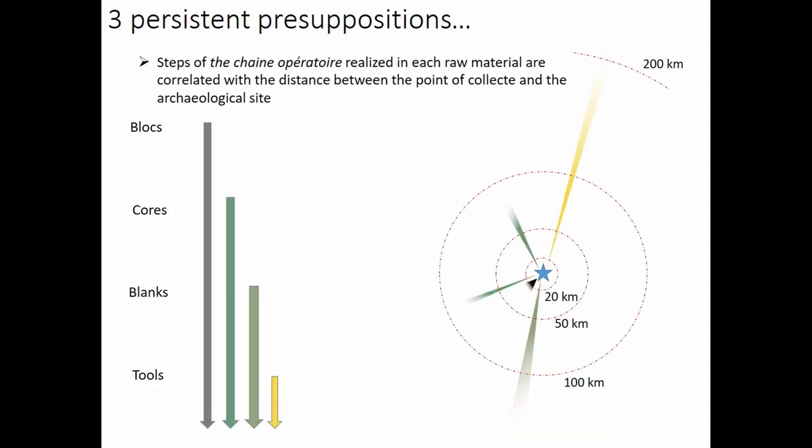The second presupposition is that the steps of the chaîne opératoire realized in each raw material are correlated with the distance between the point of collection and the archaeological site. The idea is that distant raw material will be represented on archaeological sites only by the last step of the chaîne opératoire, mainly Toulon blades for the Upper Paleolithic.